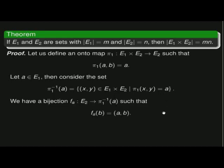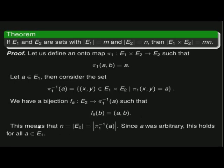This gives us a bijection F sub A from E2 into the preimage, where F sub A of B equals the ordered pair (A, B). Because F sub A is a bijection, the cardinality of E2 equals the cardinality of the preimage, which is N by assumption. Since A was arbitrary, this holds for any element in E sub 1.